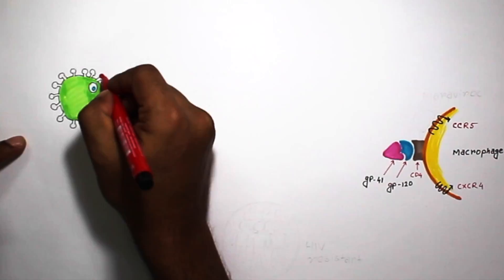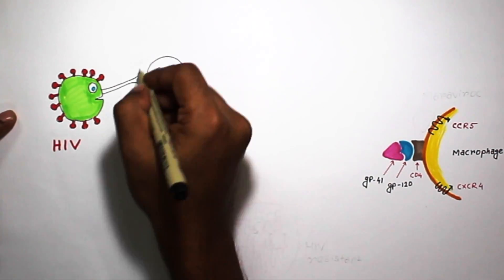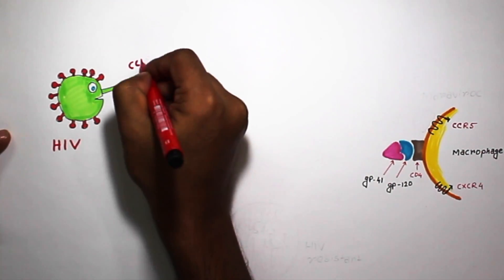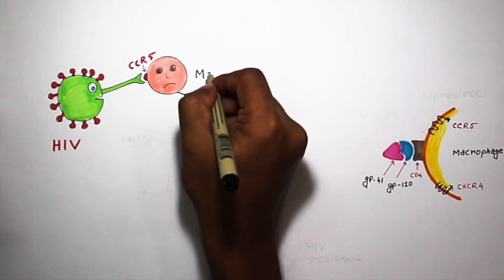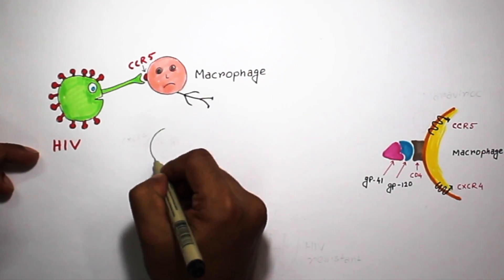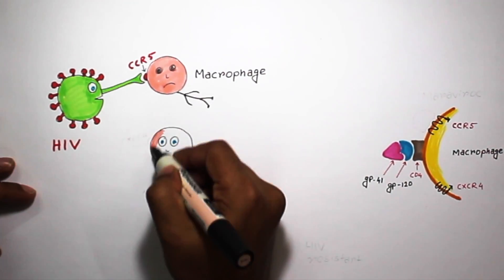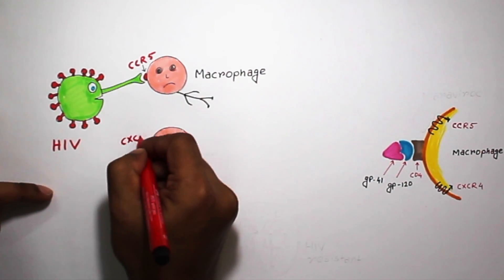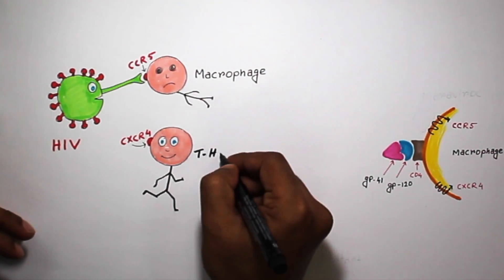When HIV first enters our body, primarily it has affinity only with the CCR5 receptor, which means it only affects macrophages and other dendritic cells. After a few generations, it acquires affinity with the CXCR4 receptor. That is why initially, for a long time, CD4 positive T helper cell count is normal for the patient.